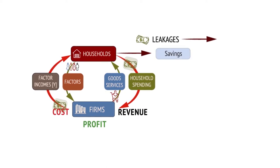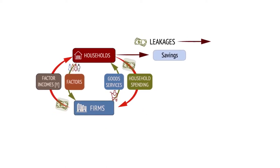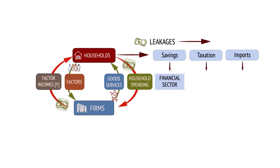Well, households are likely to save some of their income, which is a leakage out of the circular flow and makes the economy smaller. Taxes paid to the government are also a leakage, along with spending on imports from abroad. These leakages leave the circular flow through three sectors: deposits into the financial sector, tax payments to government, and payments going abroad.